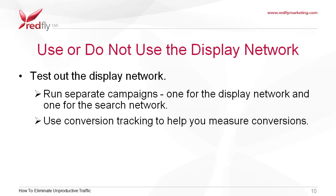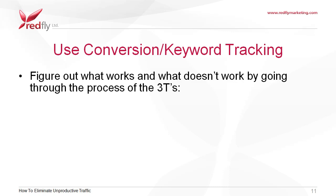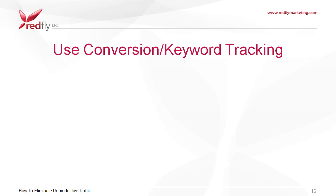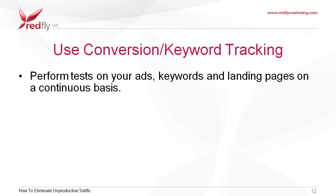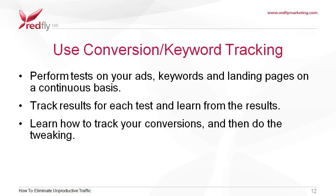Then use conversion tracking to help you measure conversions. Use conversion and keyword tracking. Figure out what works and what doesn't work by going through the process of the three T's: testing, tracking, and tweaking. Perform tests on your ads, keywords, and landing pages on a continuous basis. Track results for each test and learn from the results. Learn how to track conversions and then do the tweaking.